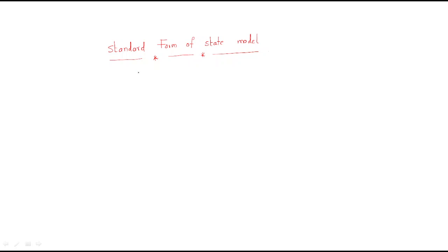The standard form is: X-dot equals AX plus BU, and Y equals CX plus DU. This is the standard form of the state model. In order to design any state model, this is the standard form. X-dot represents the state equation, which gives the present situation of the system.